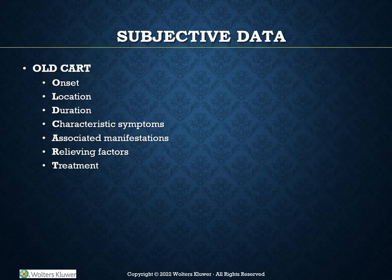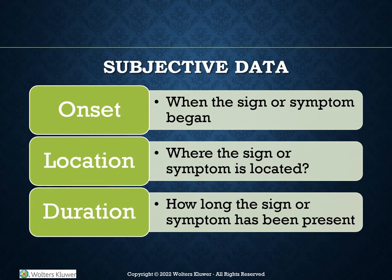I wanted to make sure I listed OLD CART in this lecture, as this will be something you use for the rest of nursing school. The information found in this mnemonic will assist you with writing your history of present illness nursing notes. Having all these components in your notes helps providers start ruling out and ruling in specific diseases or patient problems. It is essential to document all of these findings because it helps expedite the care of your patients. The next few slides define what each section of OLD CART stands for, and I will also give an example.